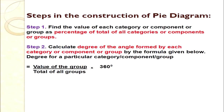Once we have computed the percentages, the second step is to convert them into degrees. Whatever percentage we have computed, multiply by 360 degrees and we will get the degree of the angle formed by each category or component or group.